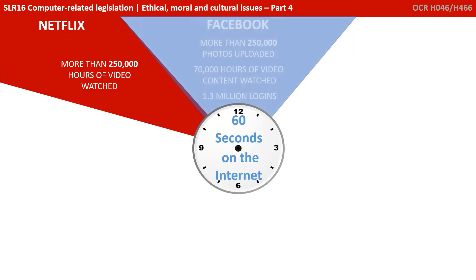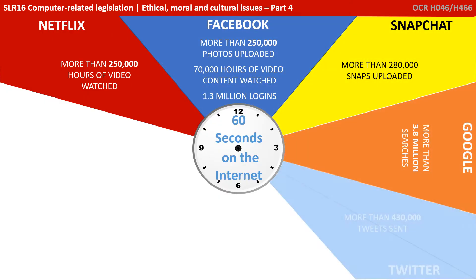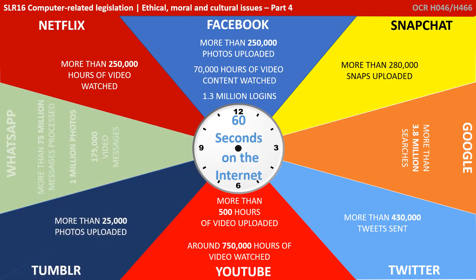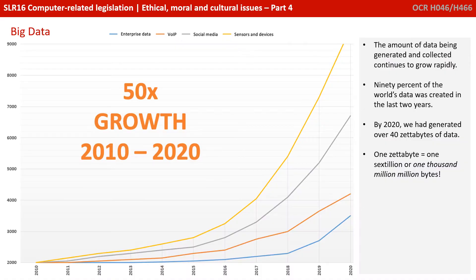This infographic nicely shows the vast amounts of data we're uploading and interacting with in just 60 seconds. The figures here are probably already out of date by the time you're watching this video. The amount of data being generated and collected continues to grow rapidly. 90% of the world's data was created in the last two years, and by 2020 we had generated over 40 zettabytes of data — one zettabyte equals one sextillion, or one thousand million million bytes. That's a lot of data.